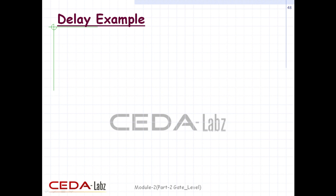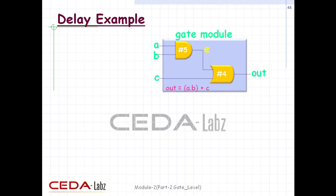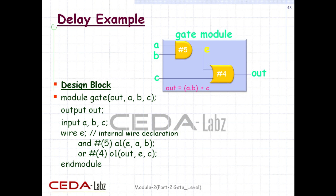Let us consider a simple example to illustrate the use of gate delays. A module called gate implements the logic equation: out = a.b + c. The gate-level implementation contains two gates with delays of 5 and 4 time units. The module is defined with module keyword, module name 'gate', and port list. Out is declared as output port, and a, b, c as input ports. E is an internal connection — not in the port list — and is declared simply as wire after port declarations. The and gate is instantiated with a delay of 5 time units, the or gate with a delay of 4 time units, and the module is terminated with end module.